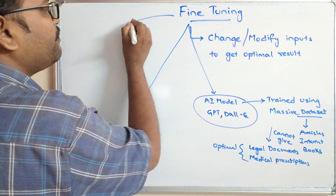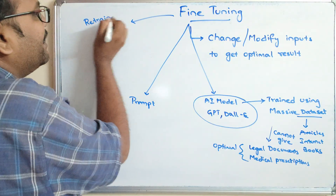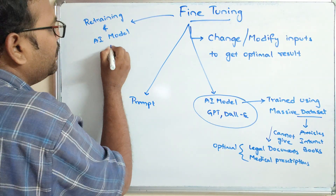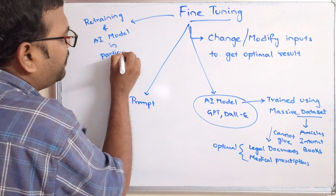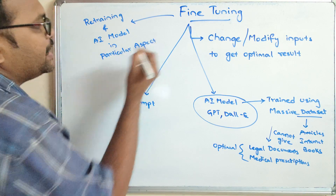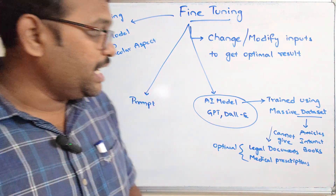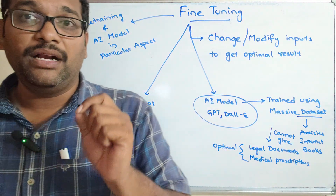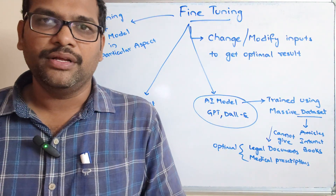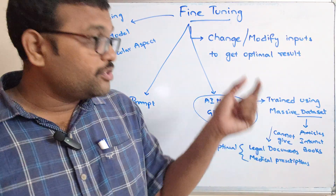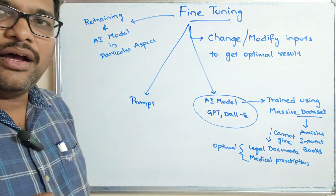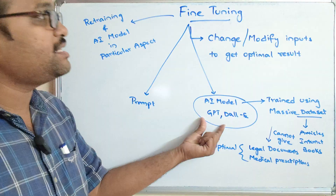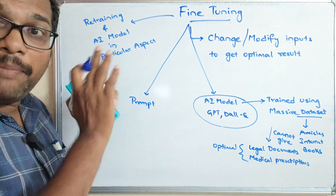So we can say fine tuning is the retraining of an AI model in a particular aspect. Whatever models we are using, those are trained using the massive dataset, and they may not give the optimal result for every specific domain - legal documents and medical prescriptions being the best example. In such cases, we can retrain the AI model. It is not necessary to train the AI model from scratch - we can make use of the existing model and retrain it in a particular aspect.